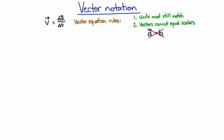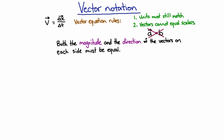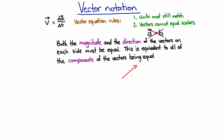Let's remind ourselves one more time what a vector equation means. For a vector equation, both the magnitude and the direction of the vectors on each side must be the same. And Vanessa showed us that this means all the individual components of each vector have to be the same — the components in each direction must match.